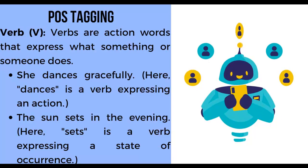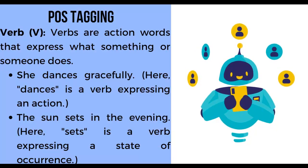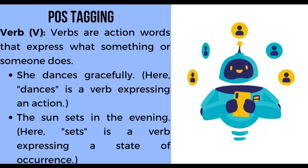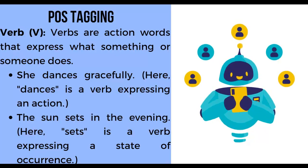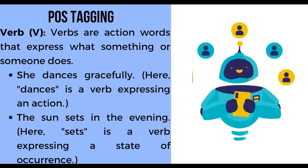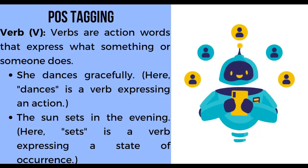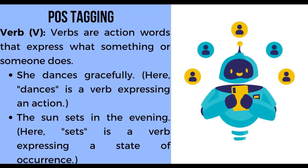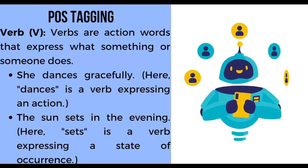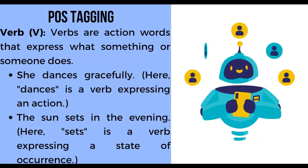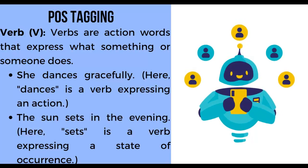Next, verb. Verbs are action words that express what something or someone does. First example: 'She dances gracefully' — here, 'dances' is a verb expressing an action. Second example: 'The sun sets in the evening' — here, 'sets' is a verb expressing a state of occurrence.